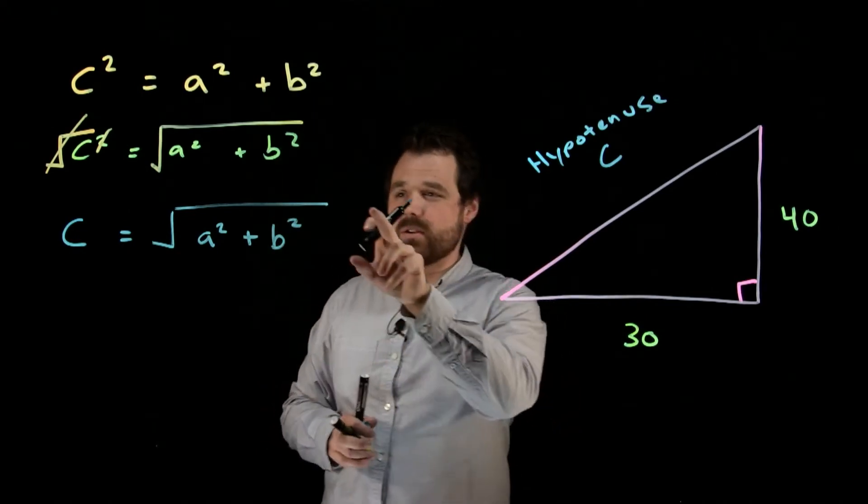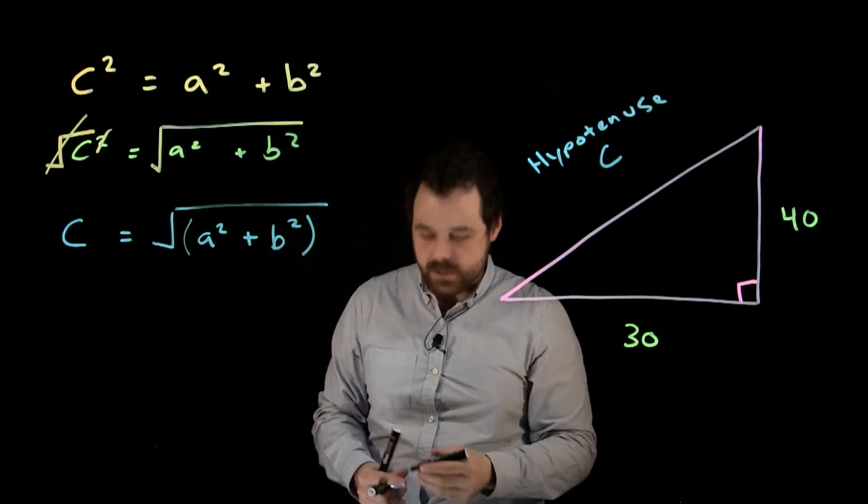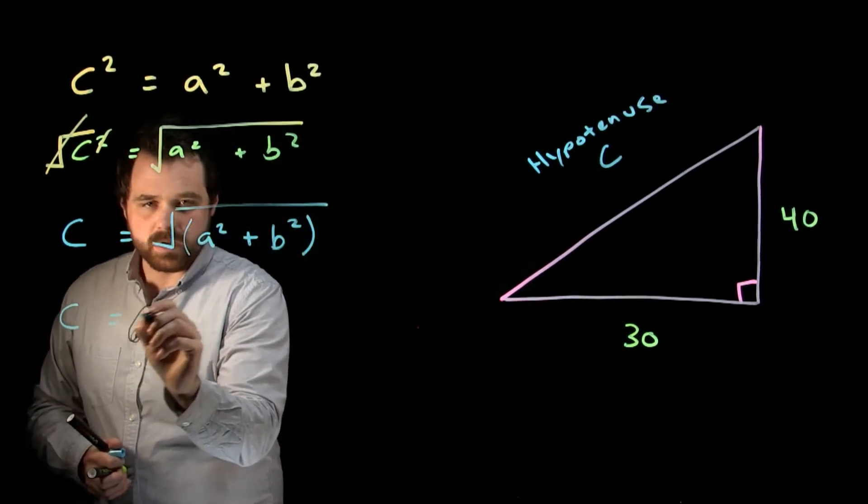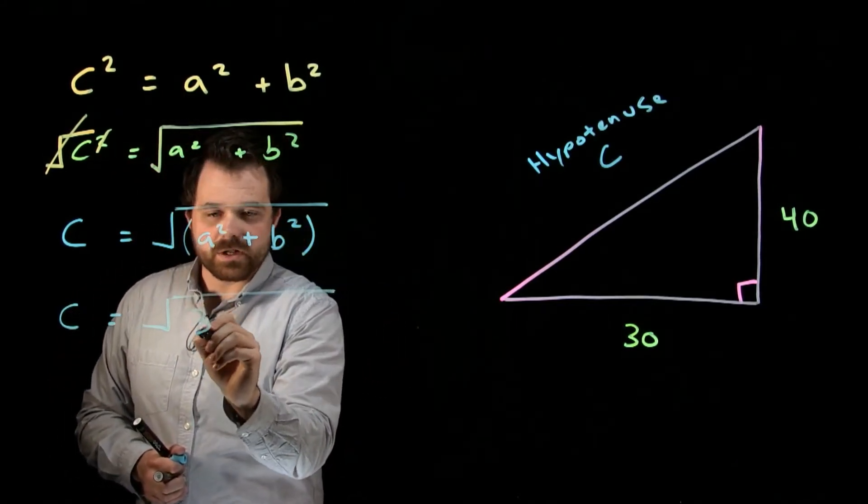Now everything that's underneath this square root symbol, when we're putting it into our calculator, we want to put it in brackets. So what we end up with is C equals the square root of 30 squared.